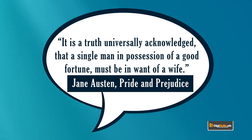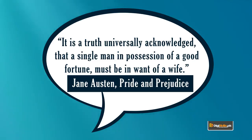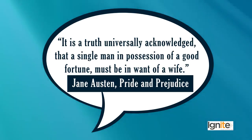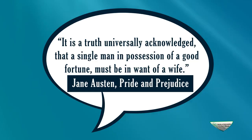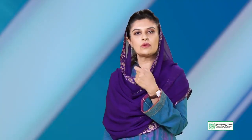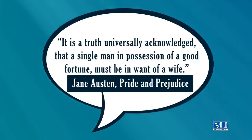Jane Austen की किताब Pride and Prejudice — वो उस ज़माने की British author हैं जिनकी society कुछ-कुछ हमारी society से मिलती-जुलती थी, जहाँ माओं को बेटियों की शादी की ज़्यादा फ़िक्र होती थी। उनका opening sentence है: 'It is a truth universally acknowledged that a single man in possession of a good fortune must be in want of a wife.' यह एक माँ की नज़र से दिखाया जा रहा है जो पाँच बेटियों की माँ है और neighbourhood में आए रईस शख़्स से बेटी की शादी कराना चाहती है।